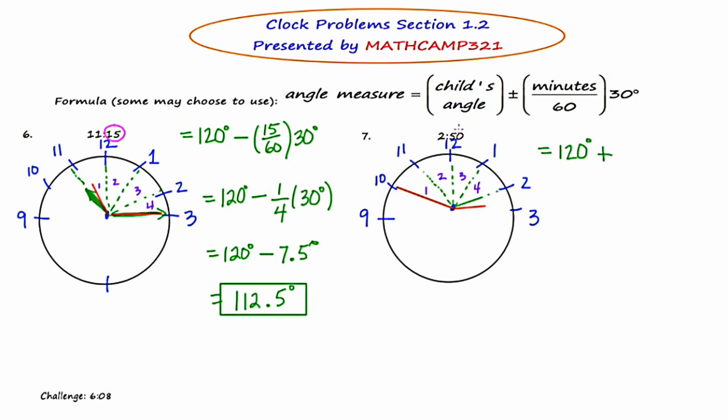Now, the minutes is 50 in this case, so we're going to put 50 over 60, and we're going to multiply that by 30, which is how many degrees are in one particular section. So now I'm going to write 120 plus 50 over 60 reduces to 5 sixths. Now, the 6 and the 30 cross cancel, and 5 times 5 is 25. So the final answer is 145 degrees.